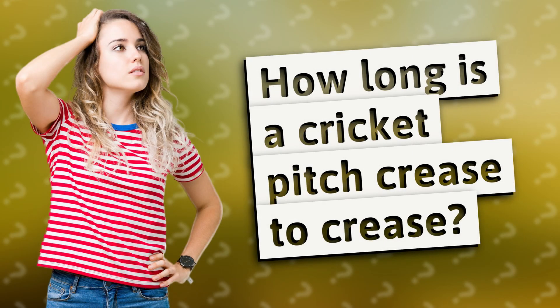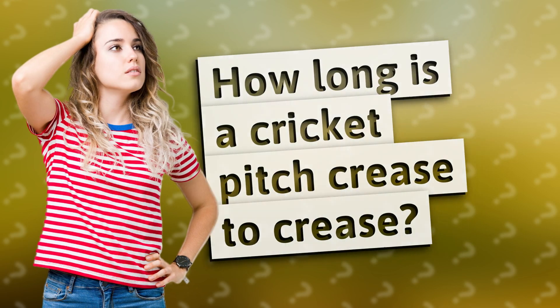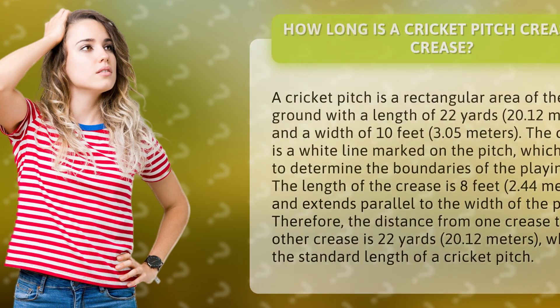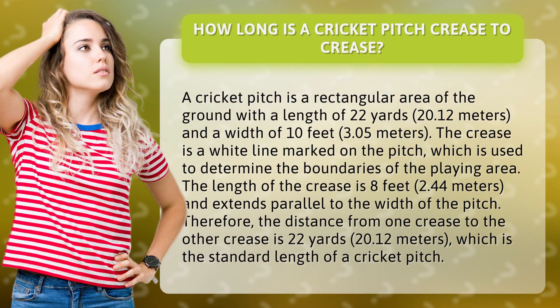How long is a cricket pitch crease to crease? A cricket pitch is a rectangular area of the ground with a length of 22 yards, 20.12 meters, and a width of 10 feet, 3.05 meters.